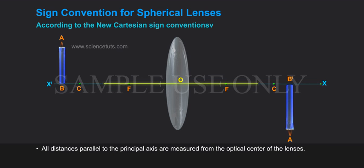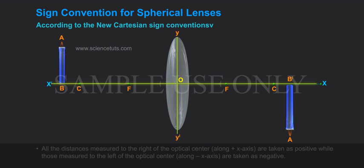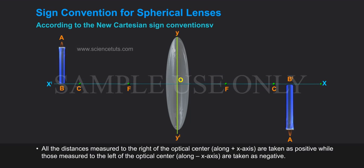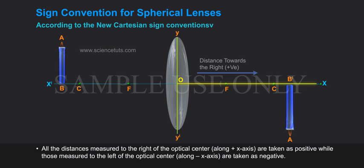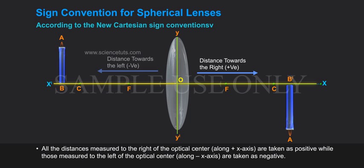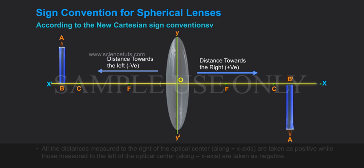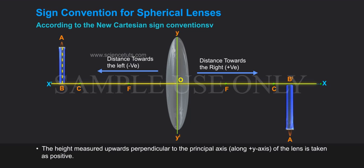All distances parallel to the principal axis are measured from the optical center of the lenses. All the distances measured to the right of the optical center along the plus x-axis are taken as positive, while those measured to the left of the optical center along the minus x-axis are taken as negative.